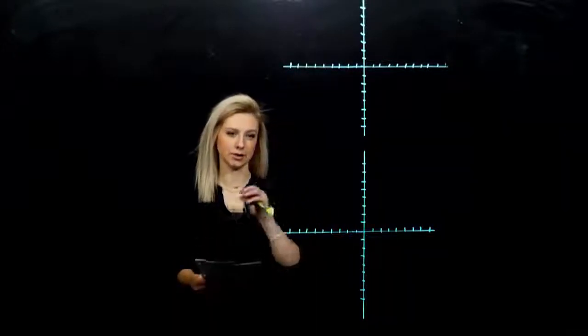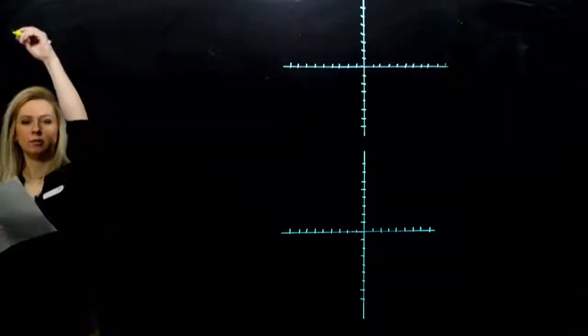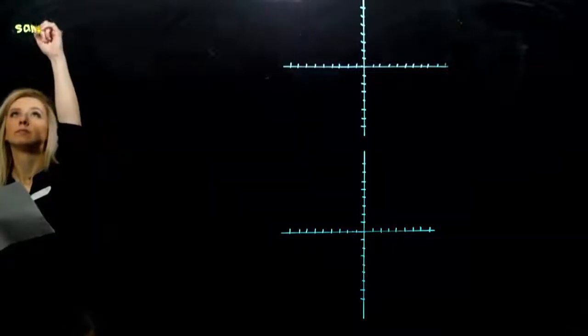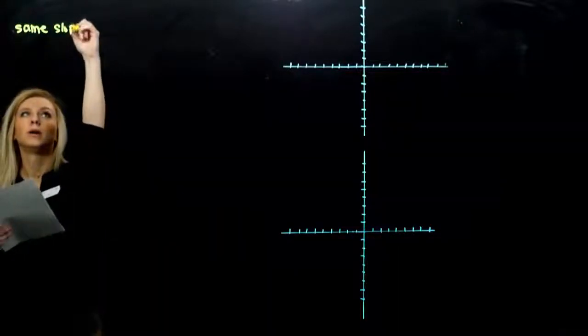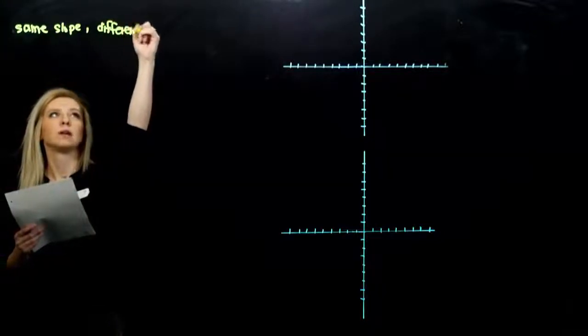So we want to kind of sum that up again. Parallel non-vertical lines, because our slope is undefined if it's vertical, they have the same slope, but different what? Different y-intercepts.